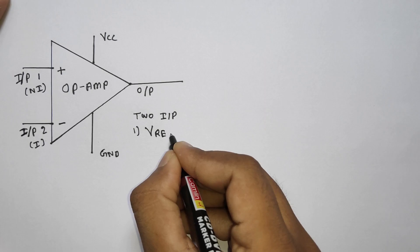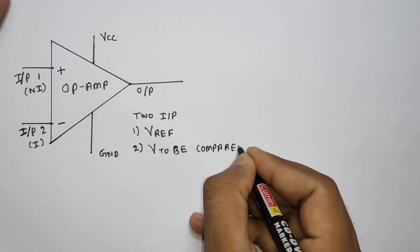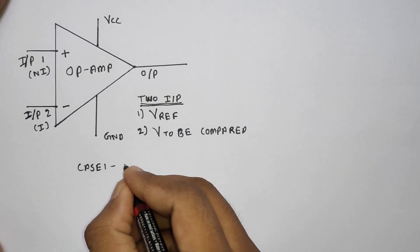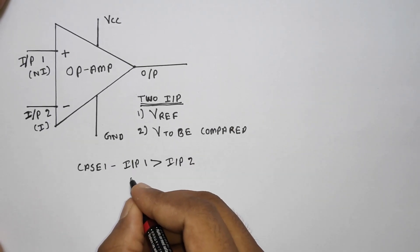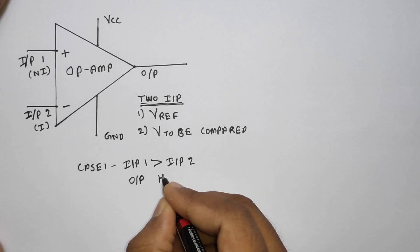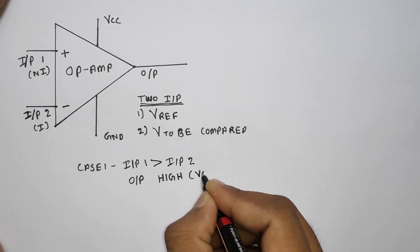The reference voltage is denoted as VREF and the voltage to be compared. The output depends on two cases. In case 1, the input voltage 1 is higher than input voltage 2, which is the reference voltage. The output of the op-amp will be high or connected to VCC.